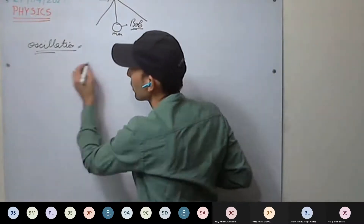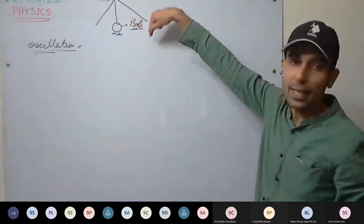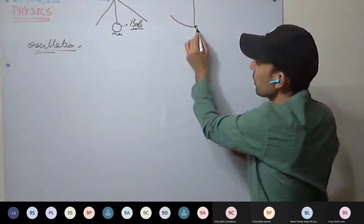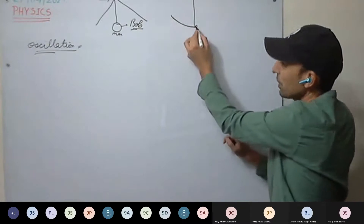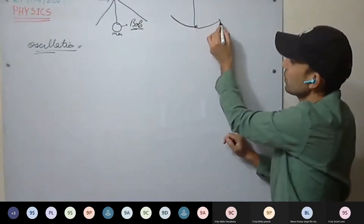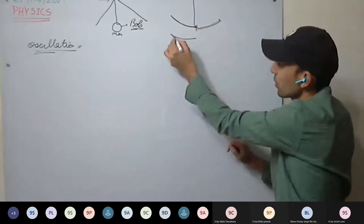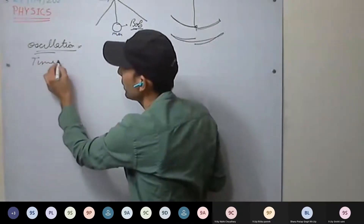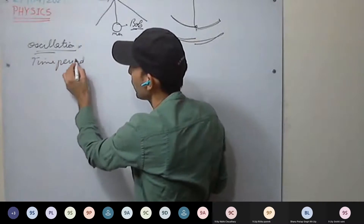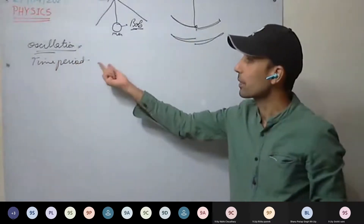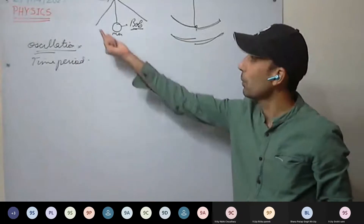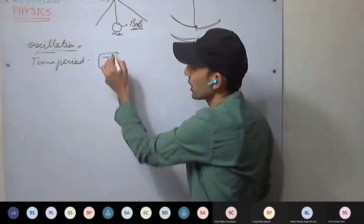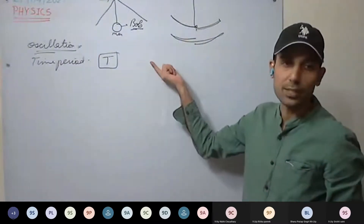One complete to and fro motion, or one complete cycle — that is the bob moving from the mean position to one extreme position, coming back to the mean position, going to the other extreme position, and coming back. This one cycle is called one oscillation. After this we discussed time period: the time taken by the bob to complete one oscillation, denoted by T, unit is second.